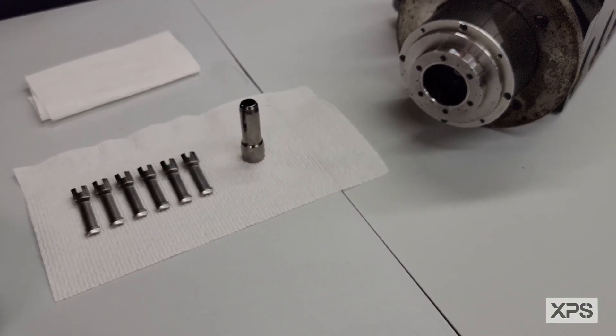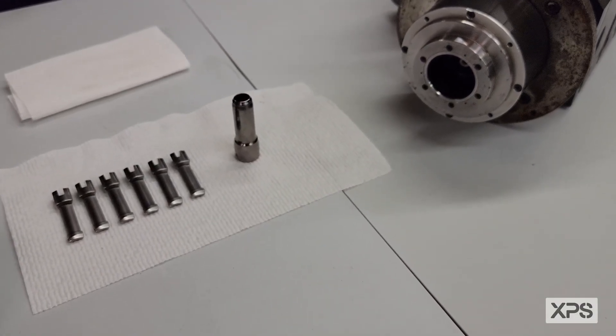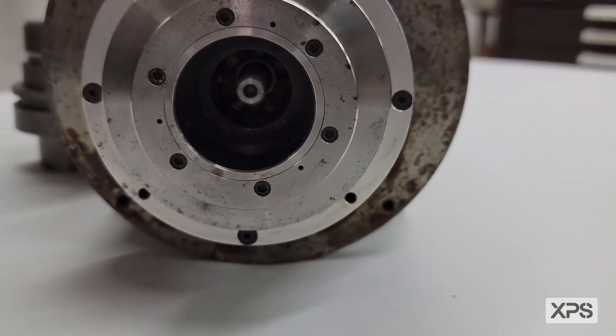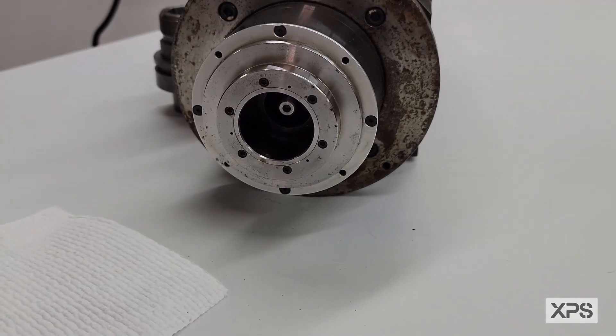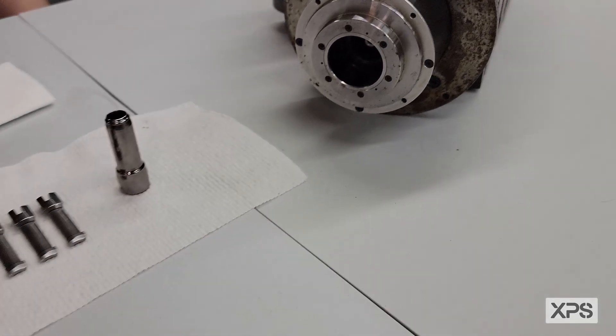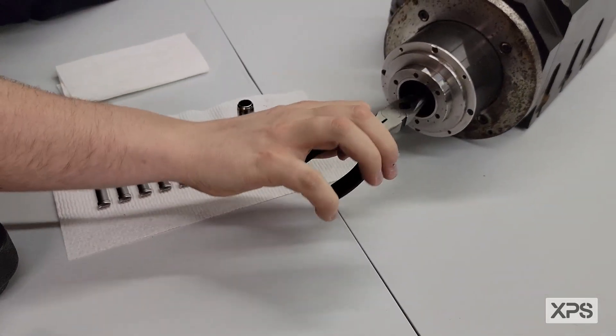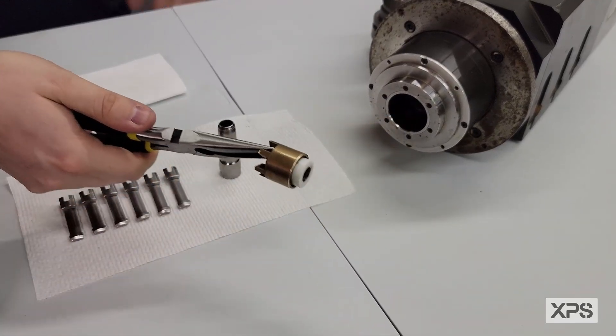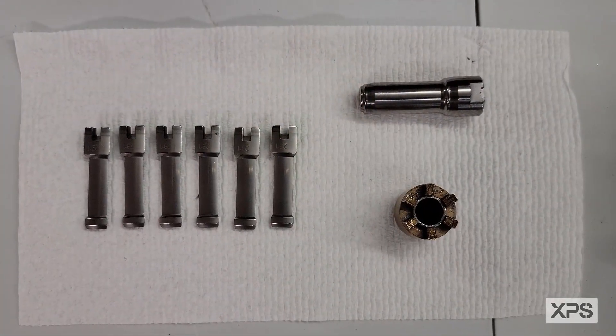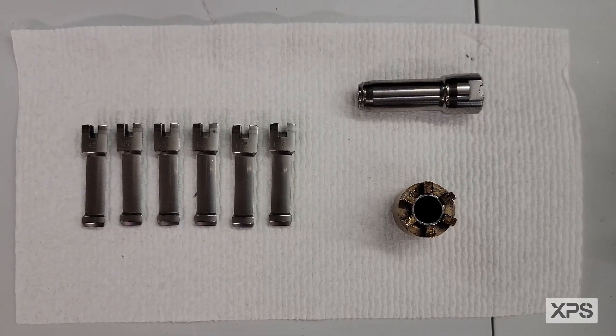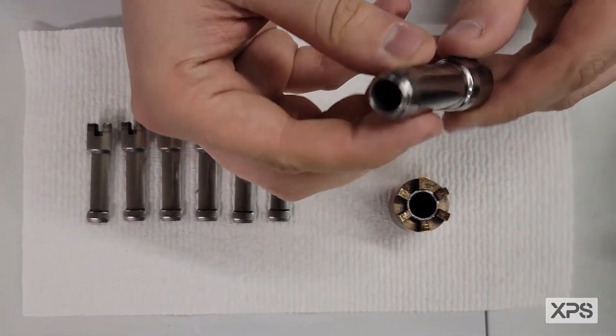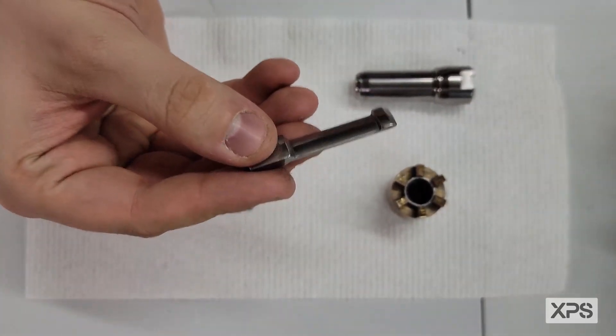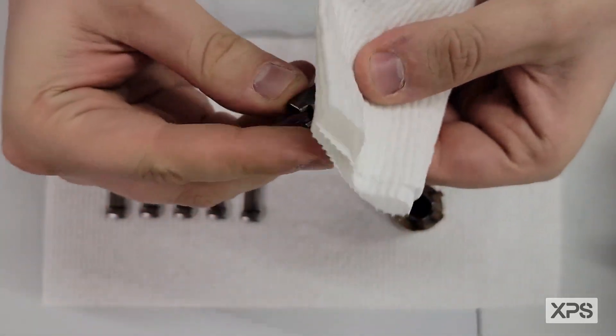After the fingers are removed, you're going to want to get access to the castle spring assembly. What we usually do to make it easier is we deactivate the drawbar and then take the included pliers and pull it out. Now that these components are removed from your spindle, you're free to inspect each part for excessive wear. Wipe down any debris, cleaning each part thoroughly.